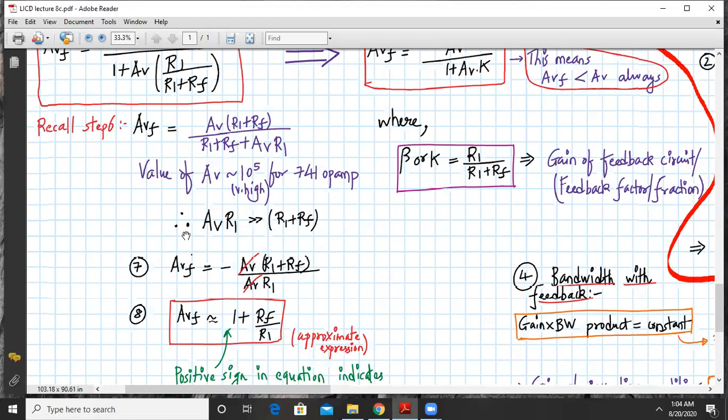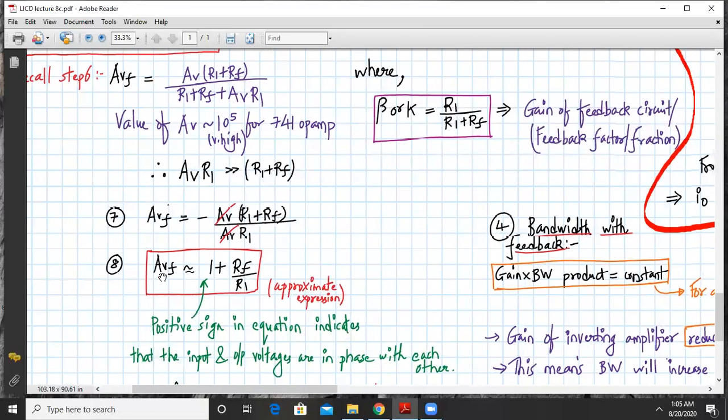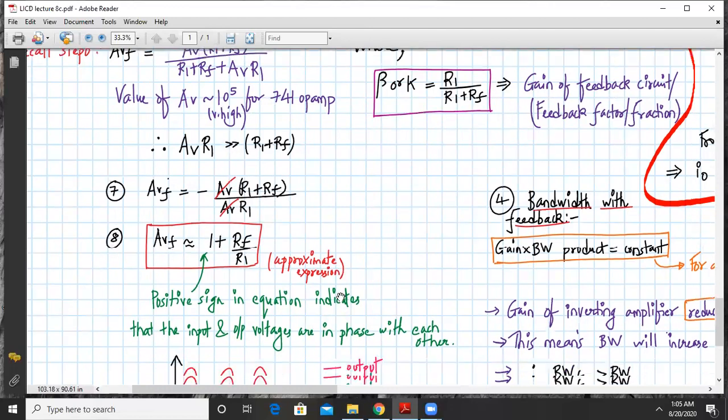If you do that, what do we get? AVF will be equal to—there is no minus sign here, I think it is by mistake. Please ignore this minus sign, it is by mistake. It is AVF equals AV times R1 plus RF divided by AV into R1, where AV gets cancelled out. We get finally the expression AVF approximately equals 1 plus RF upon R1, and this is my approximate expression.